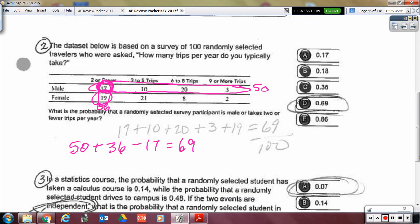All right, on number two, we had to add up the males and then also include the two or fewer, so you could do this a couple different ways. You can add up this 50 here, plus this 19 right here. Another way is probability of A was 50 over 100, probability of B was 36 over 100, but you had 17 of those double-counted, so you subtracted the double-counted part for a final answer of 69 over 100, which was D.